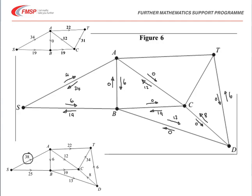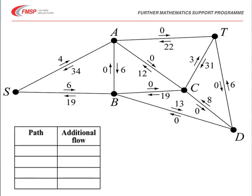C to T has a flow of 31 at the moment, so we could change that 31 backwards or increase it by a possible 3. From A to T we've got a flow of 22, which is at full capacity, so we can't increase it but could reduce by 22. For getting that table correct, there was a single method mark for that part of the question, which then goes on to use flow augmentation.